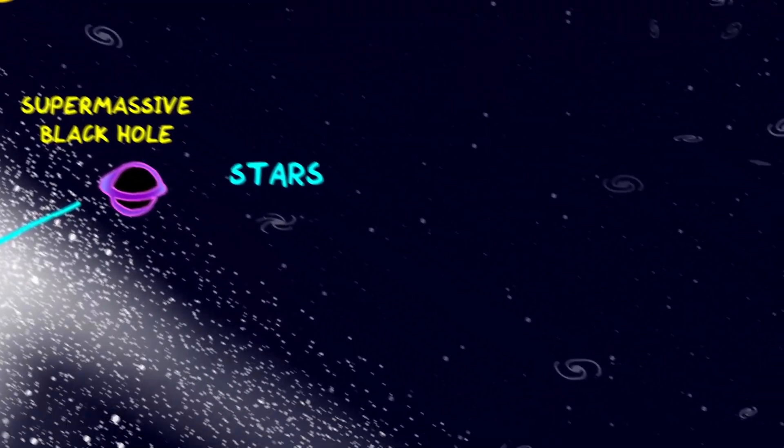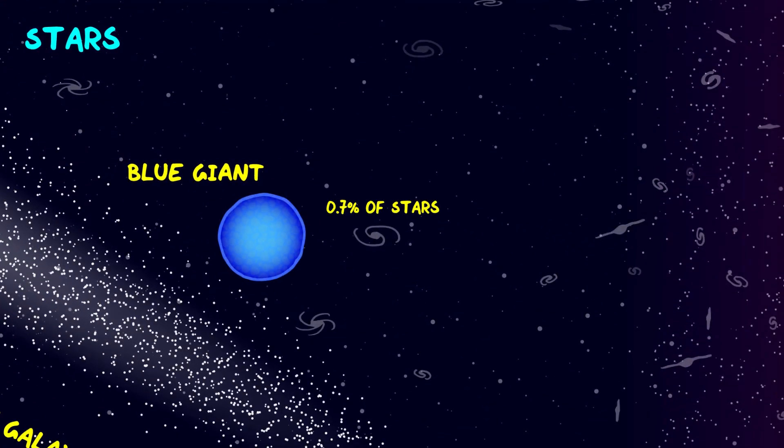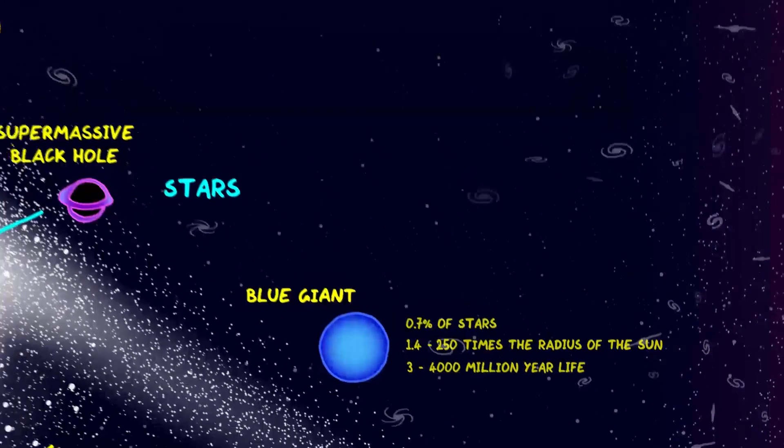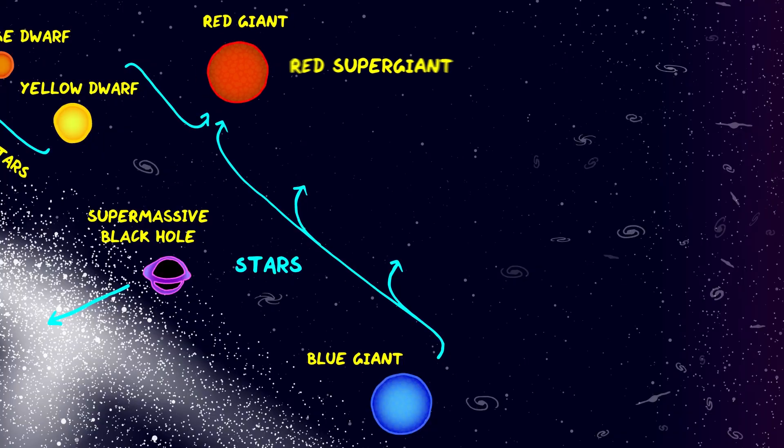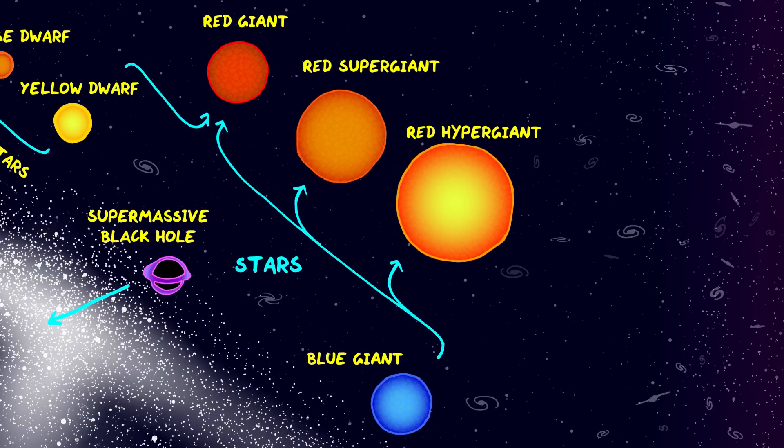Much bigger than the main sequence stars are the blue giants with a radius of 1.4 to 250 times the radius of the Sun, and much shorter lives existing for three to 4,000 million years. At the end of their lives they can cool into red giants, supergiants or hypergiant stars.